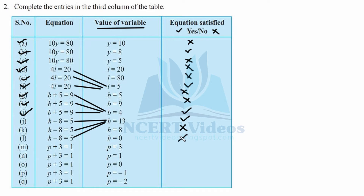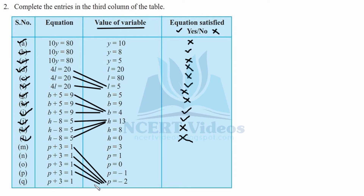And 0 minus 8 is minus 8, which is not equal to 5. Now for e plus 3 equal to 1: trying 3, we get 3 plus 3 equals 6, which is not equal to 1. Trying 1: 1 plus 3 is 4, which doesn't follow. But minus 2 works: minus 2 plus 3 is 1, because when signs are different we subtract and the sign of the greater number applies. So e equal to minus 2 solves this equation.